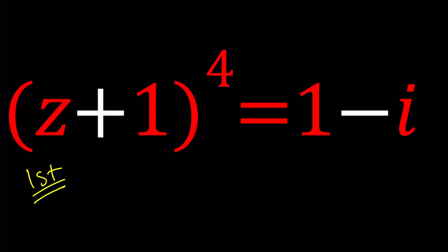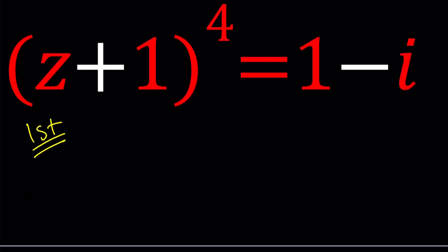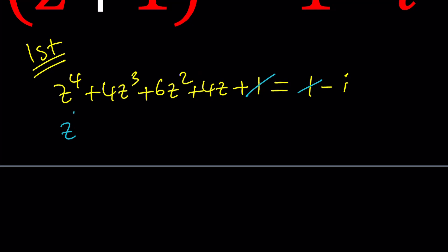I'm going to go ahead and expand the left hand side from the binomial theorem. We get Z to the fourth plus 4Z cubed plus 6Z squared plus 4Z plus 1 and that is equal to 1 minus I. 1 cancels out and we can add I to both sides. Z to the fourth plus 4Z cubed plus 6Z squared plus 4Z plus I equals 0. So we get our quartic equation. Everything is on the left hand side and we're going to solve for Z.